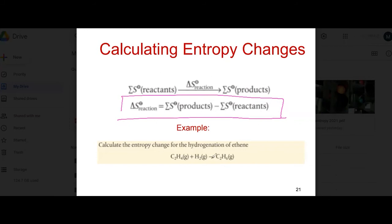Now let's see the example. Calculate the entropy change for the hydrogenation of ethylene. I will write again here: hydrogenation of ethylene to form ethane. We should find the entropy change. We may need this table.